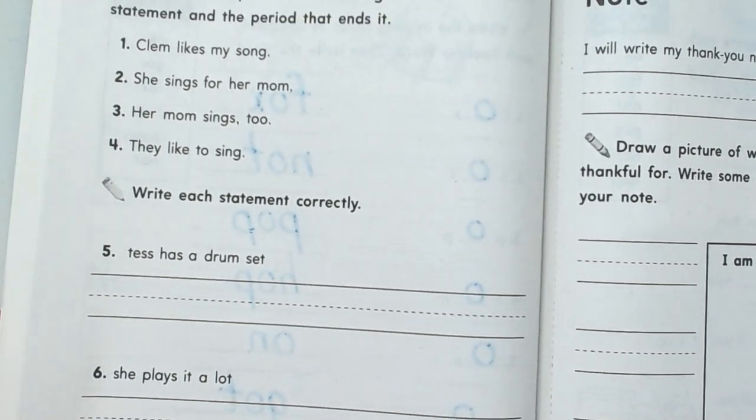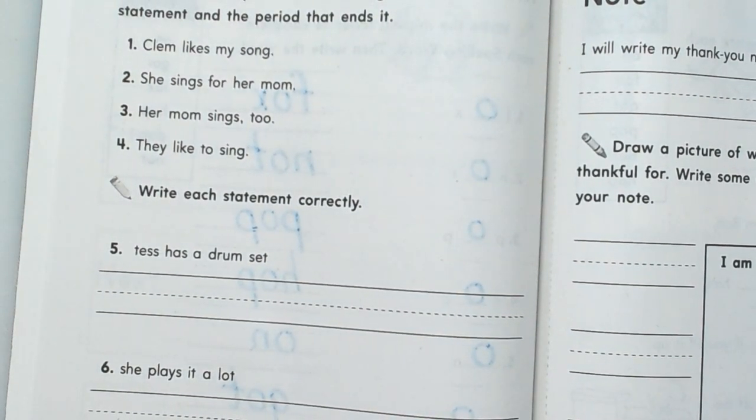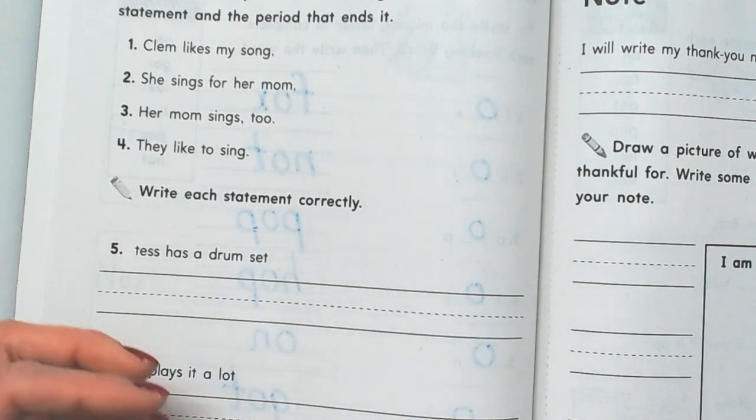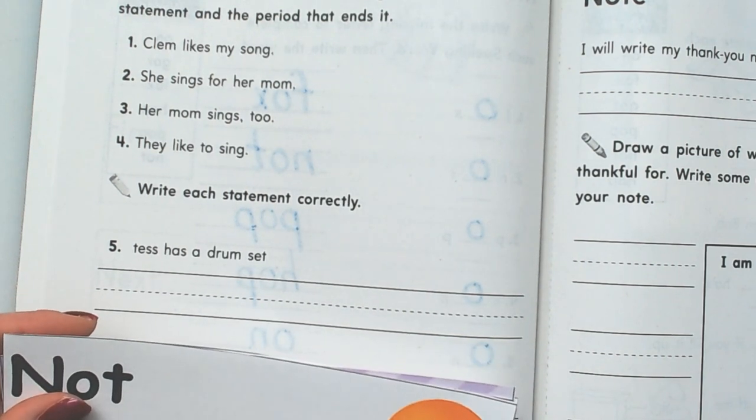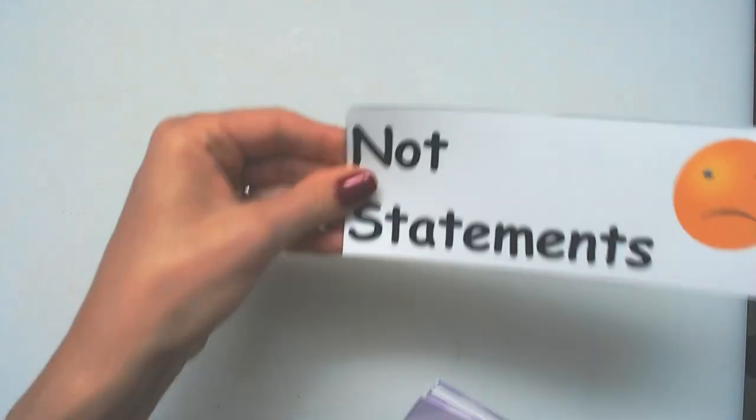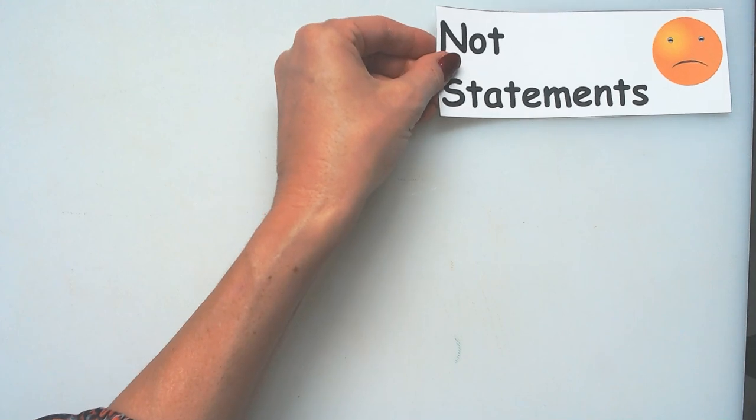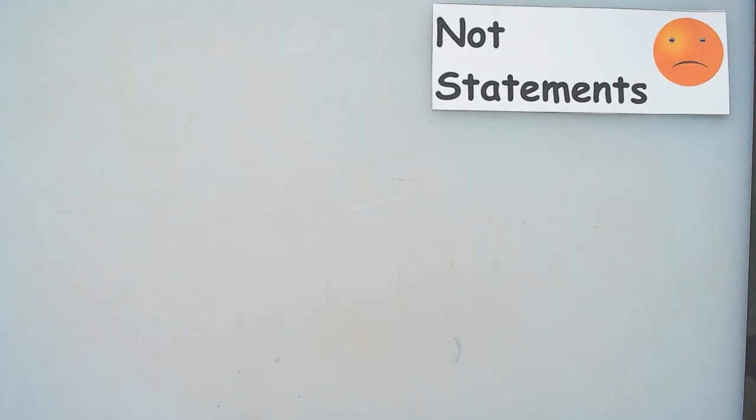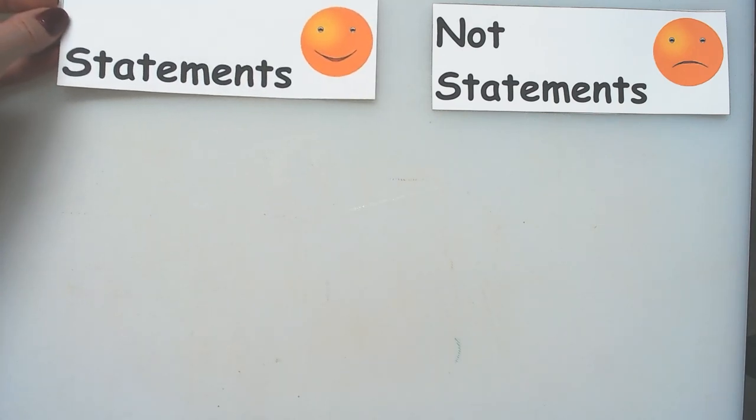Okay, here's our last page. This is about writing statements, and remember statements tell us something and they end with a period. They also begin with a capital letter. So I'm going to give you some examples and non-examples. So this one says NOT statements. That means they do not end with a period, they do not tell something, they do not begin with a capital letter. Okay, and this one says statements.